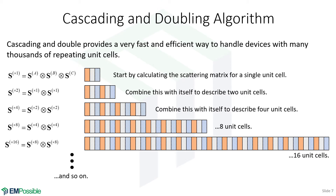This can keep going. The efficiency gain may not be immediately apparent, but if we had a longitudinally periodic structure with one million unit cells — that's three million layers — it would only take about 20 iterations. The big question is: what if we have 27 unit cells, something that isn't a power of two? How do we modify this algorithm to handle any number of layers?